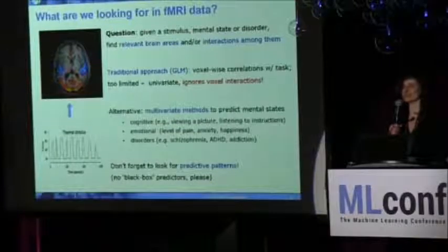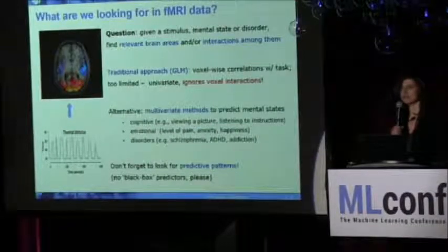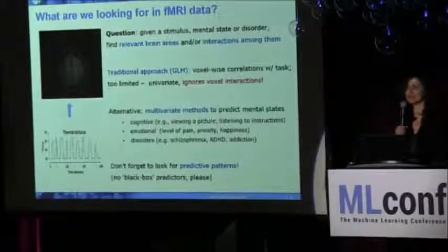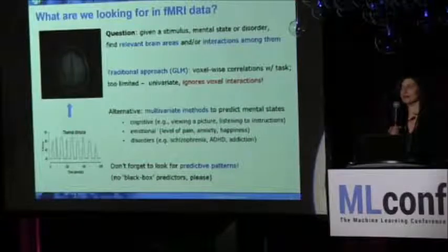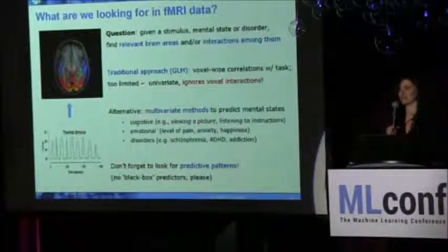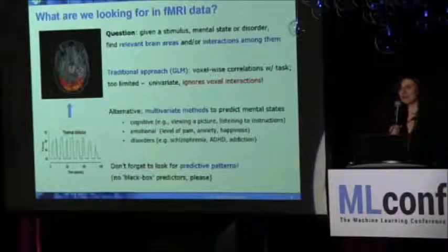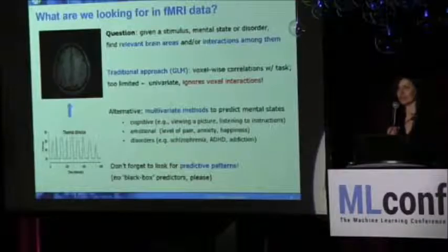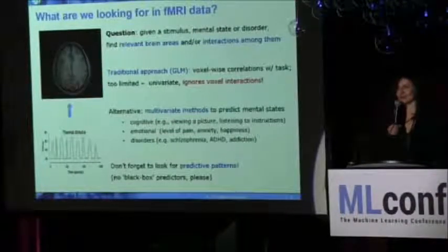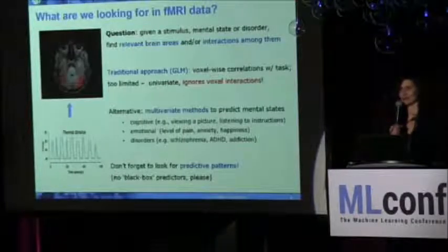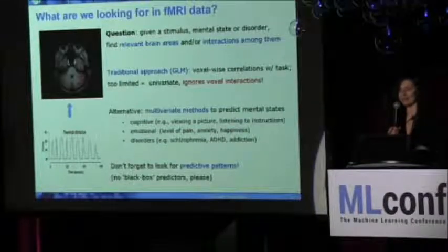As a more reasonable alternative, in the past decade people have been actively exploring multivariate predictive methods in functional MRI for predicting all kinds of mental states — cognitive states like viewing pictures and listening to instructions, emotional states like feeling pain or being anxious, and especially interesting biomarkers for mental disorders. The key is that in this field you are not just interested in a good predictor — you're interested in understanding the brain, so you better use interpretable models.